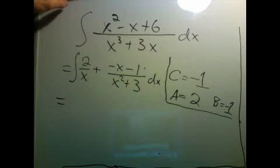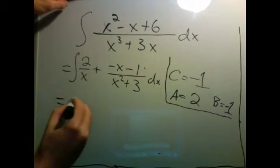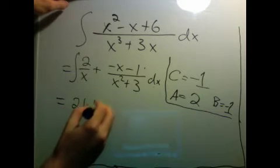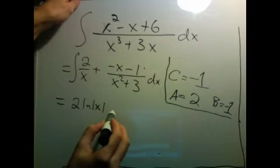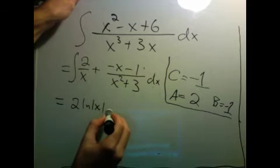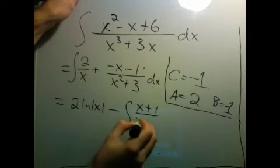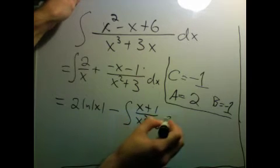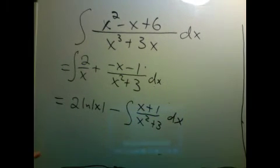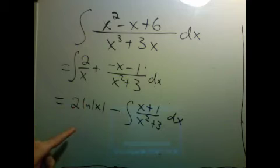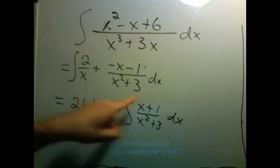Well, the first part is easy. It's just 2 natural log absolute value of x. And then the next thing we want to integrate is this. So maybe let's just remember what we've done so far and work on this one separately.